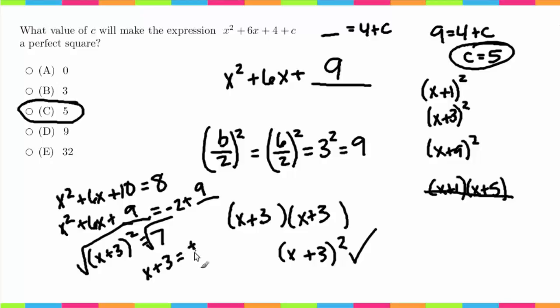Subtract 3 from both sides. You get x = -3 ± √7. So that was a lot easier instead of going through the entire quadratic process, at least in my opinion.